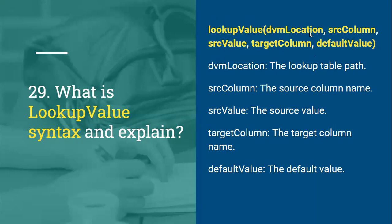Let's explain each parameter. DVM location is where we pass the lookup table path. Source column is the source column name. Source value is the dynamic input we pass to the lookup — in our example, we pass the country code like 'USA'. Target column is what we expect as a response — in our example, country name. Default value is returned when no matching value is found in the lookup table based on the input.